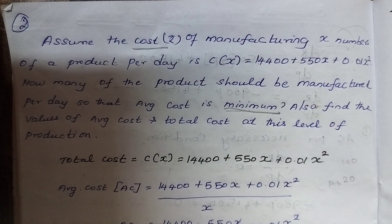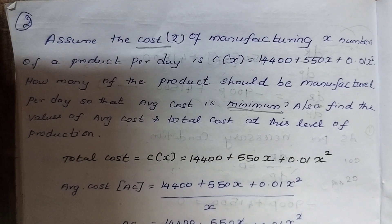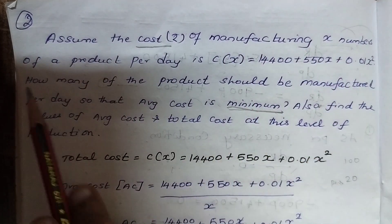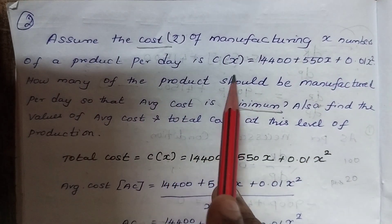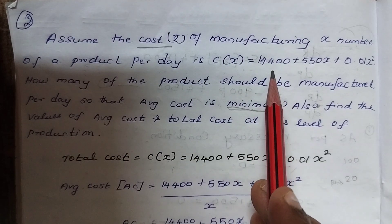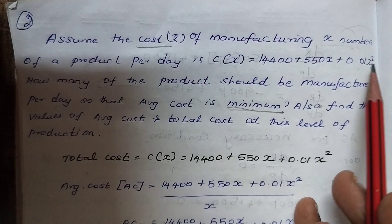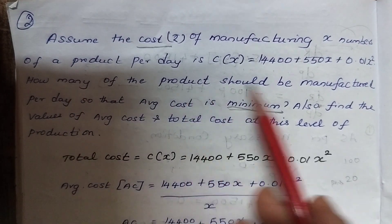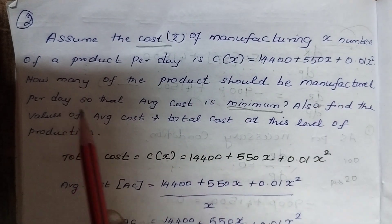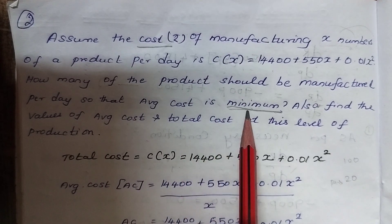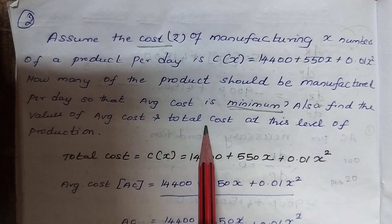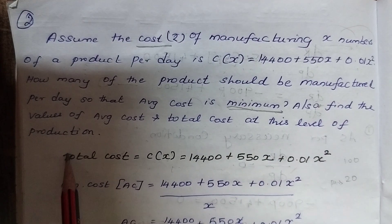Hi friends. In the name of CME Model 13, Business Application of Maximum Minimum. Assume the cost of manufacturing x numbers of a product per day is C(x) = 14,400 + 550x + 0.01x². How many products should be manufactured per day so that the average cost is minimum? Also find the values of average cost and total cost at this level of production.